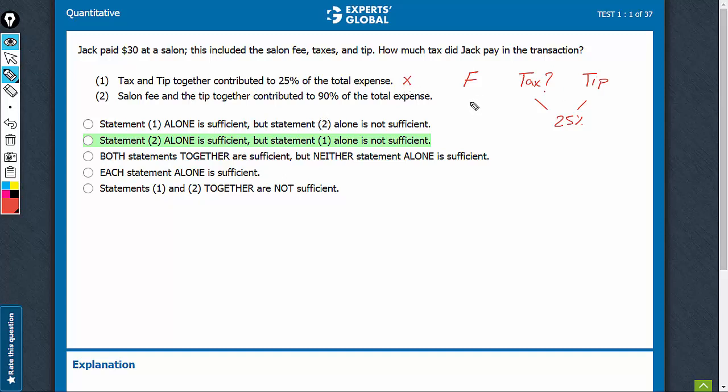Look at statement 2. This is telling that fee and tip contributed 90%. Fee and tip contributed 90%, therefore tax contributed 10%, which is $3. Statement 2 alone is sufficient.